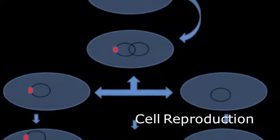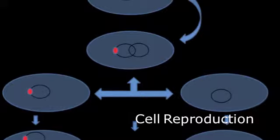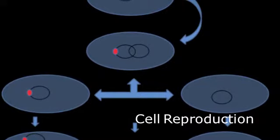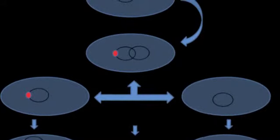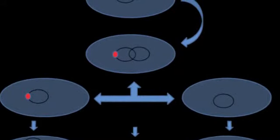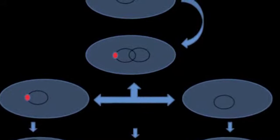A bacteria replicates by binary fission. Binary fission is when the parent cell splits into two. It is asexual reproduction.